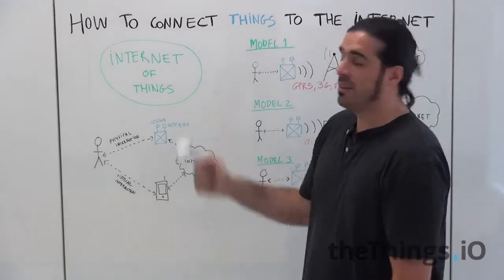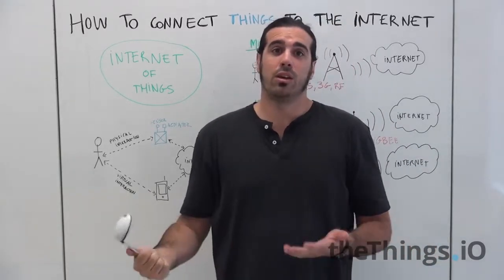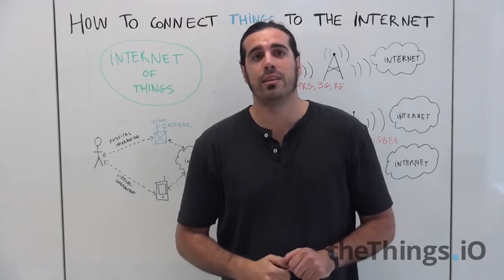The Internet of Things is today a big trendy topic introduced in 1999 by Kevin Ashton and englobes a bigger picture of how to connect anything to the internet.